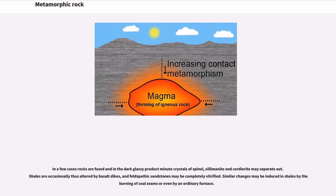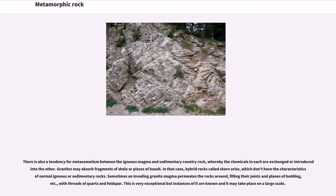In a few cases rocks are fused and in the dark glassy product minute crystals of spinel, sillimanite and cordierite may separate out. Shales are occasionally thus altered by basalt dikes, and feldspathic sandstones may be completely vitrified. Similar changes may be induced in shales by the burning of coal seams or even by an ordinary furnace. There is also a tendency for metasomatism between the igneous magma and sedimentary country rock, whereby the chemicals in each are exchanged or introduced into the other. Granites may absorb fragments of shale or pieces of basalt, and in that case hybrid rocks called skarn arise, which don't have the characteristics of normal igneous or sedimentary rocks.